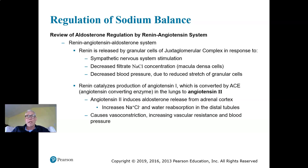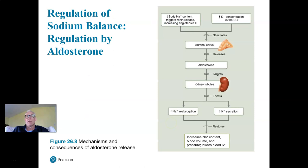Renin catalyzes the production of angiotensin-1 from angiotensinogen in the circulation. Angiotensinogen is always present, produced by the liver. Renin cleaves off a peptide, producing angiotensin-1, which is then spontaneously converted to angiotensin-2 as blood circulates through the lungs — the endothelial cells have angiotensin-converting enzyme. Angiotensin-2 induces aldosterone release via receptors on the aldosterone-secreting cells of the adrenal cortex, and is also a powerful vasoconstrictor that increases vascular resistance, peripheral resistance, and blood pressure.